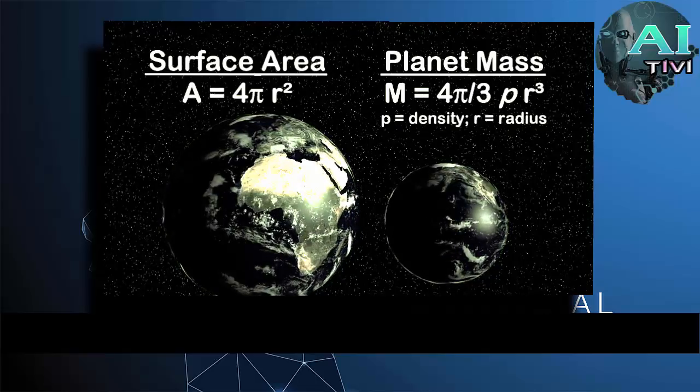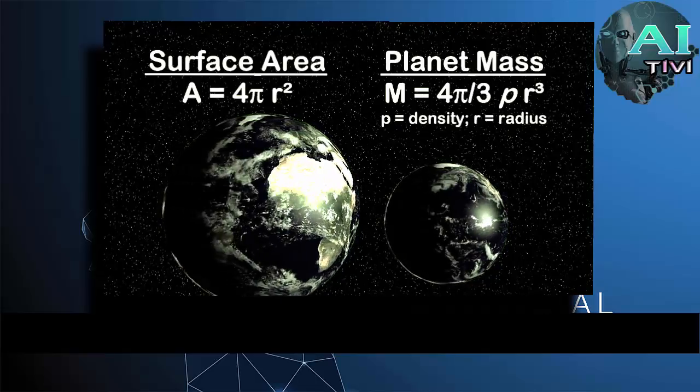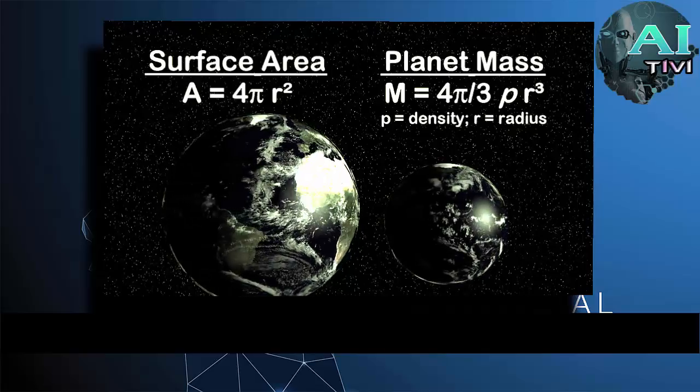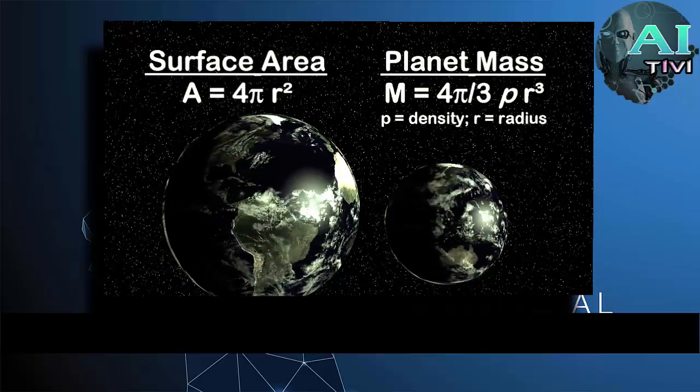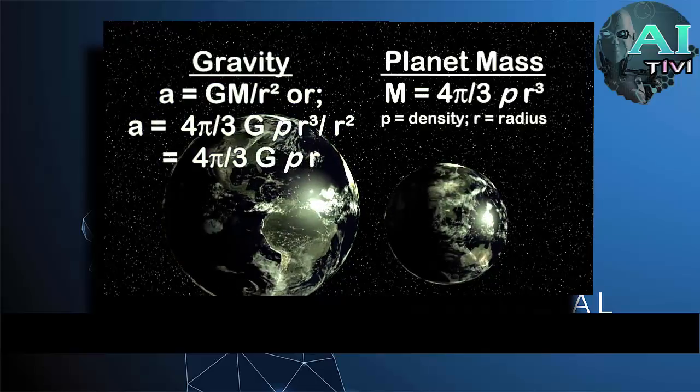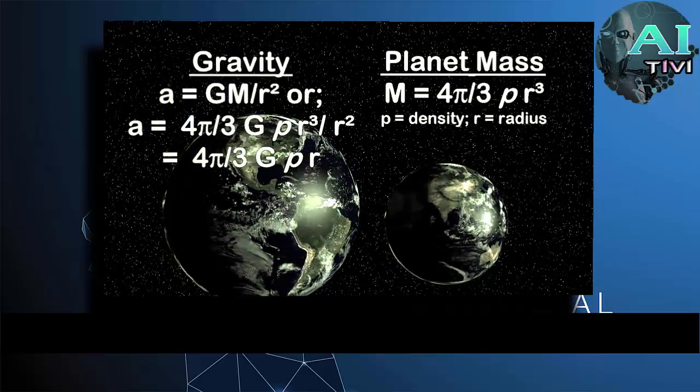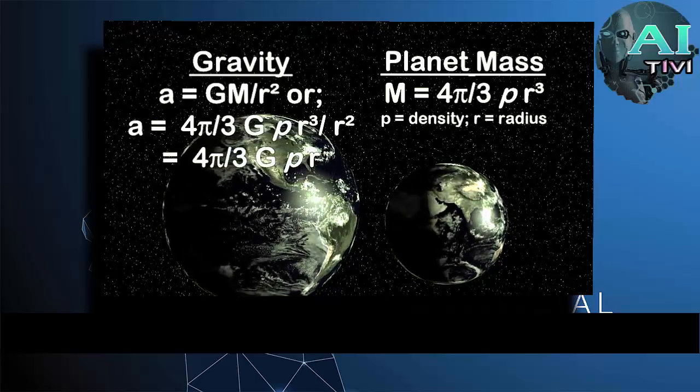Mass rises with a cube of distance, if the object has no change in density, whereas gravity falls off as the square of distance. For such an object, the strength of gravity at the surface rises linearly with the distance of that surface to the center, the radius. Double the radius, double the gravity.